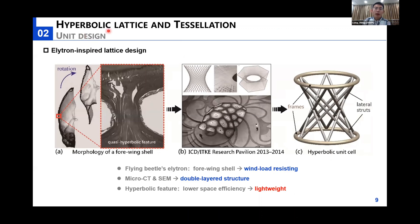The second part is on the design of the hyperbolic lattice and its tessellation. In reality, this design was inspired from a flying beetle's elytra. According to such a microcomputed tomography carried out by biologists, we have observed a clearly double-layered structure, and we notice a quasi-hyperbolic column-like trabecular. It interconnects the external and internal shells of this hardened forewing shell. We consider the excellent wind load-resisting capacity of this structure and developed such a hyperbolic feature for this lattice design.